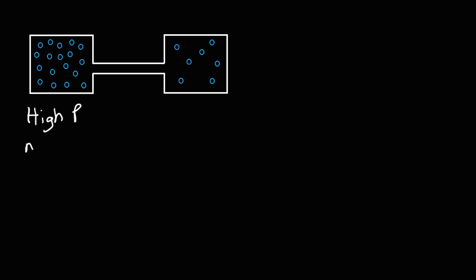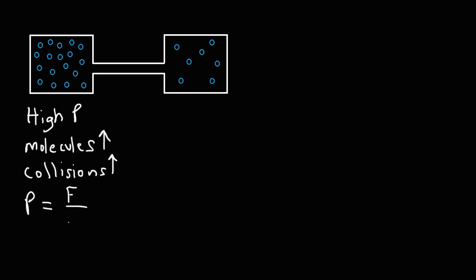As the number of gas molecules increases in a container, the number of collisions between those gas molecules and the walls of the container increases. And with more collisions, you have a greater force exerted by these molecules on the walls of the container. Pressure and force are related — pressure is force divided by area. So anytime you increase the force applied on a surface, you also increase the pressure. If you double the force applied over a surface, the pressure will double as well.